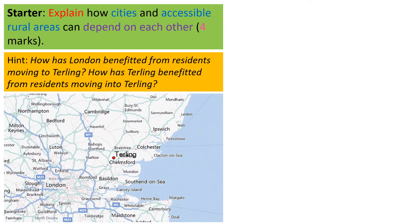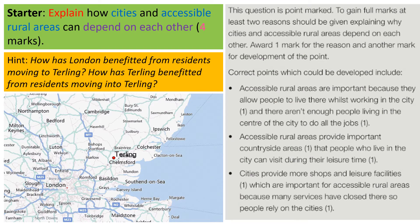So first and foremost, when we're thinking about cities and accessible rural areas depending on one another — remembering that this is called interdependence — we need to think about how London has benefited from residents moving to Turling, and also how Turling has benefited from residents moving in from London. In order to gain two full marks, you need at least two reasons explaining why cities and accessible rural areas depend on each other.